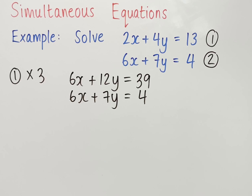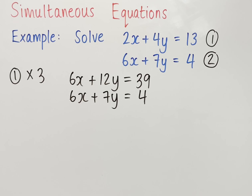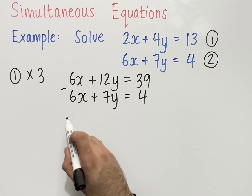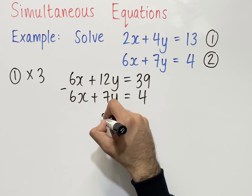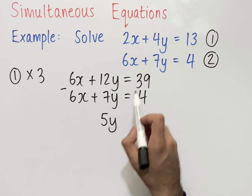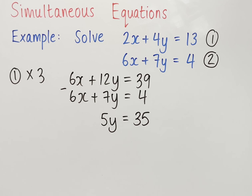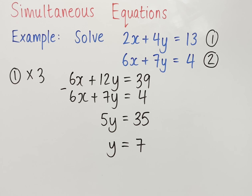Since we've got 6x in both equations, we can cancel them by subtracting the two equations from each other. 6x minus 6x is 0, so we don't need to write anything. 12y minus 7y gives us 5y, and 39 minus 4 gives us 35. So to work out what y is, we divide both sides by 5, which gives us y equals 7.